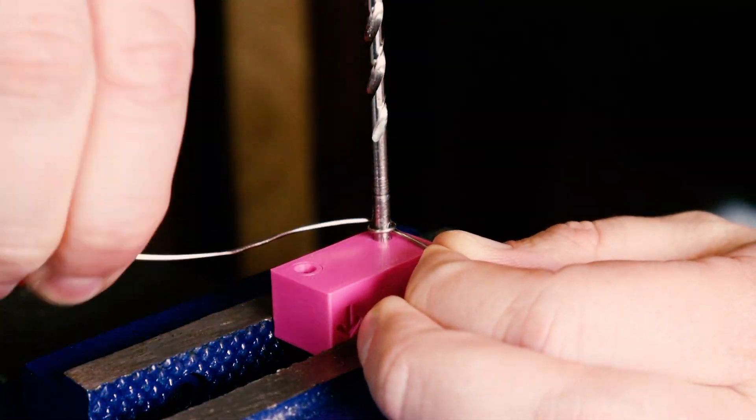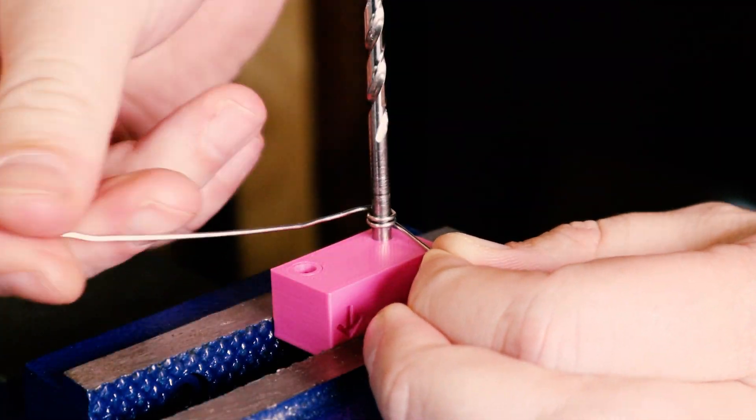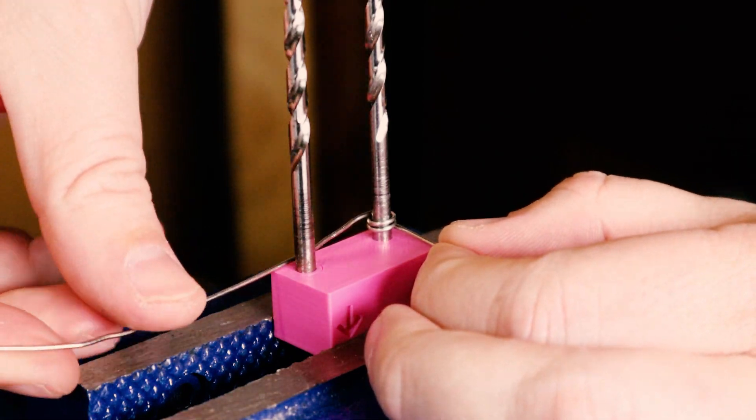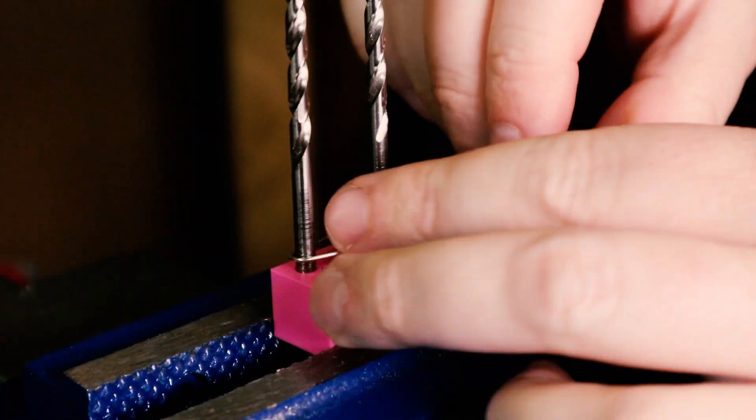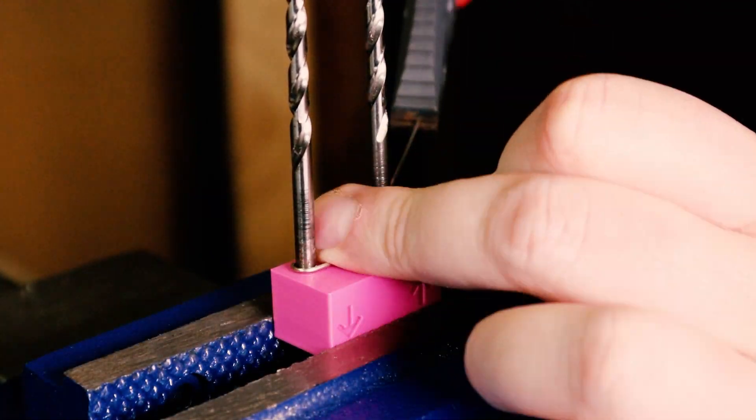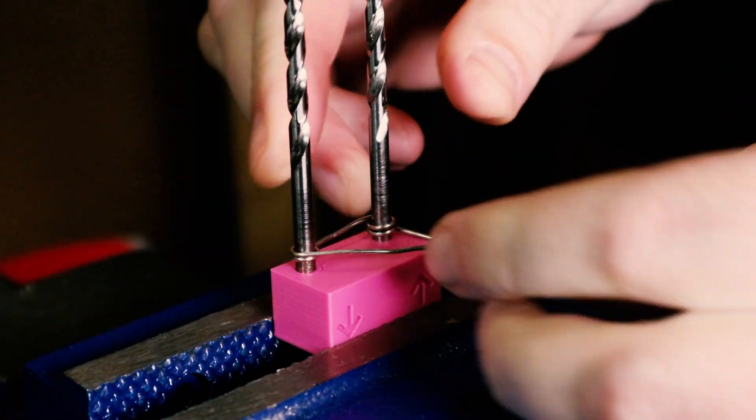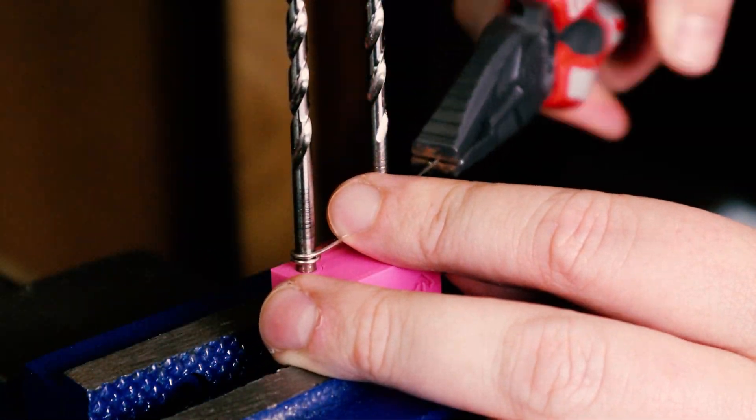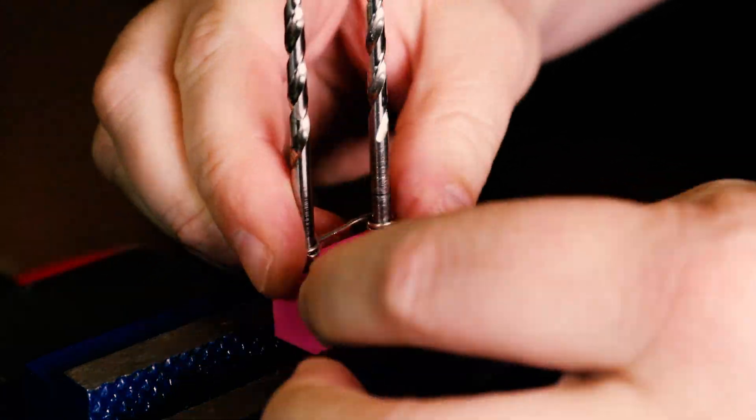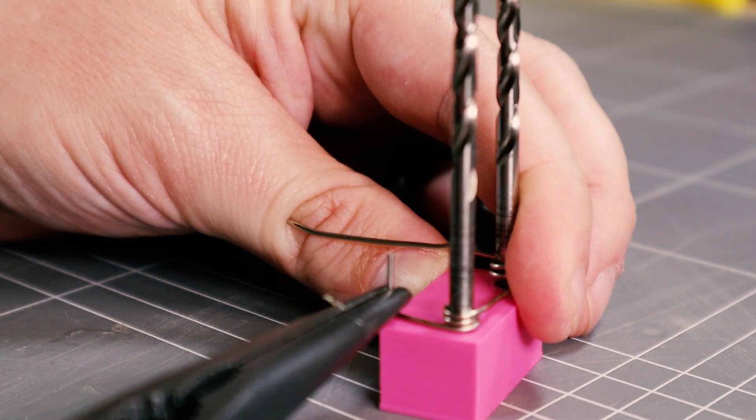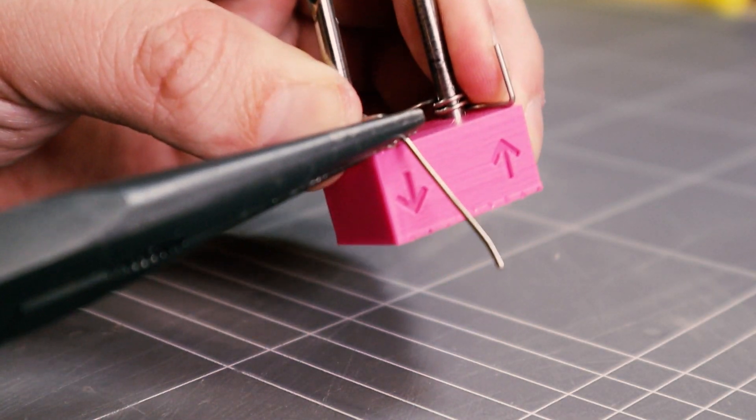This can be a little tricky on the first go but it only takes a minute. Try and keep everything nice and tight. The arrows on the front of the jig indicate which way to bend the ends.